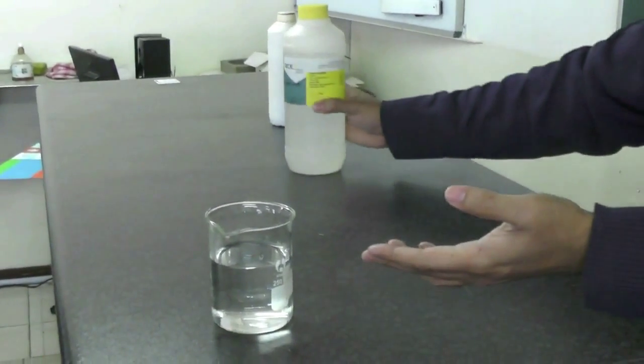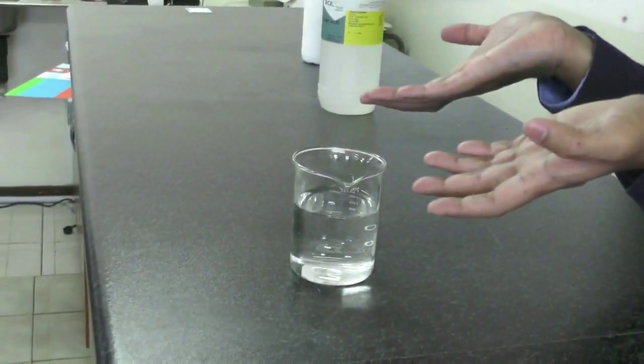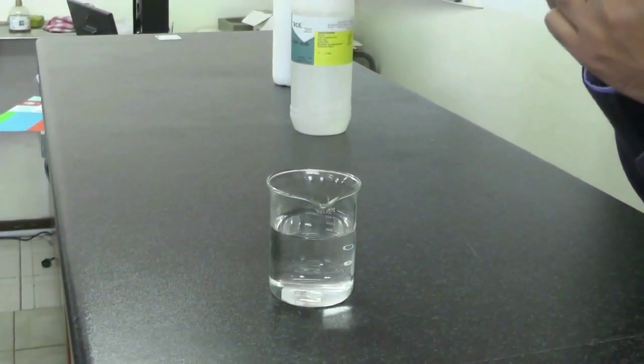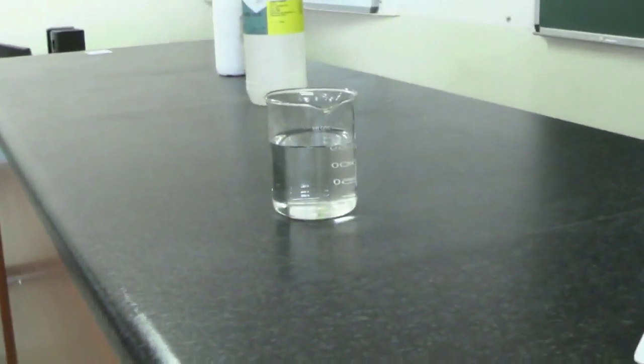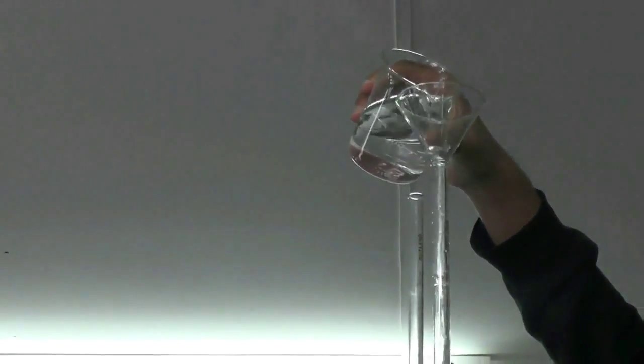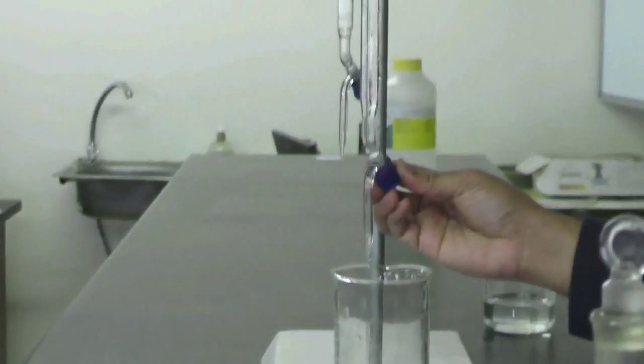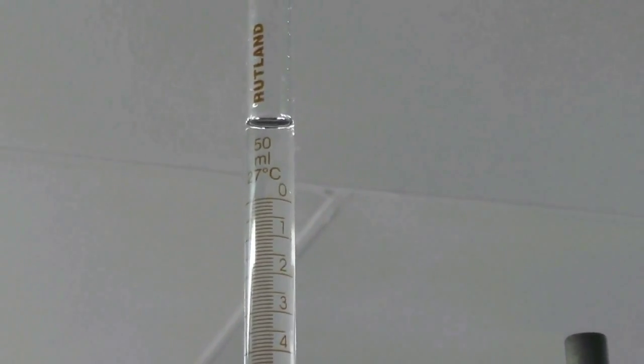We don't know the concentration of this HCl solution right now. We'll find the concentration by doing the titration. Now I must put the acid in the burette. Go slowly down. You can see there is a zero mark here. Now I'll bring it to zero.